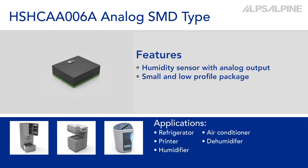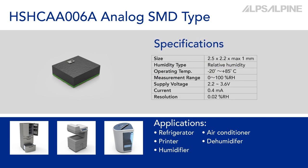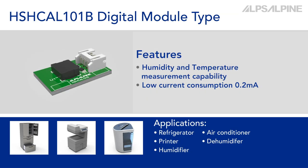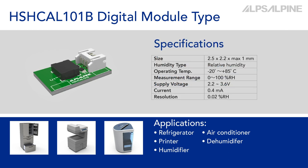The HSHCAA006A is an analog humidity sensor, SMD type. The HSHCAA0010B is a digital humidity and temperature sensor, module type. This module sensor has low current consumption of 0.2 microamps.